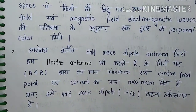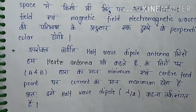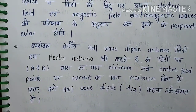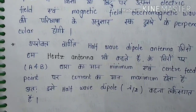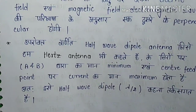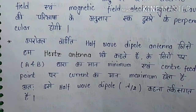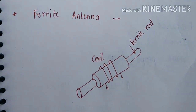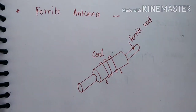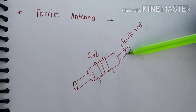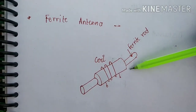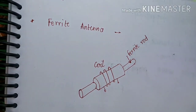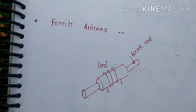In the half-wave dipole antenna, at points A and B the current is minimum and at the center feed point the current is maximum. This is the half-wave dipole. Next, the ferrite rod antenna — this is a ferrite antenna, also called a loop antenna, and we discuss its construction.